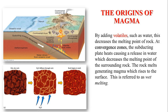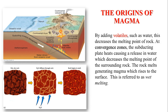Another factor that can influence melting rock is by adding volatiles or water. At a subduction zone, you've got oceanic crust subducting beneath continental crust. As it goes down and is subducted, that causes water to be released into the surrounding rock. By adding that water, you are lowering the melting point, and because of the intense heat, the rock melts. This is called wet melting — when water is added to rock — and it's very common along convergent zones.